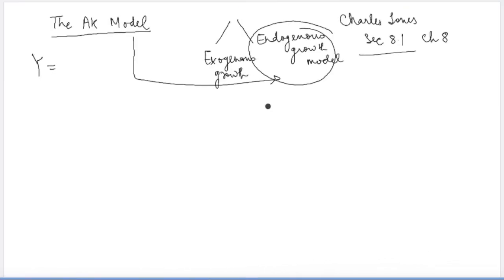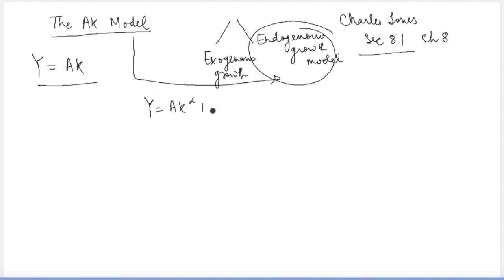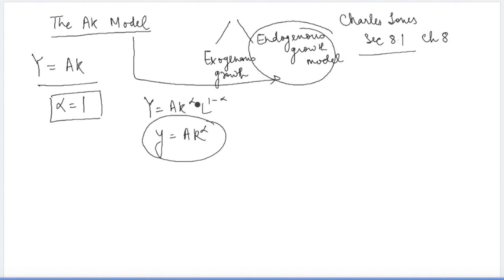We start by understanding the production function of the AK model. The production function looks like this: Y is equal to AK, and that is why the model is called the AK model. You can compare it with the production function of the Solow model or Romer's model, where usually you have a Cobb-Douglas function with a superscript on K. In the AK model, we are assuming that the value of alpha is equal to one — this is the limiting case where alpha becomes exactly equal to one, whereas normally alpha has to be between zero and one.